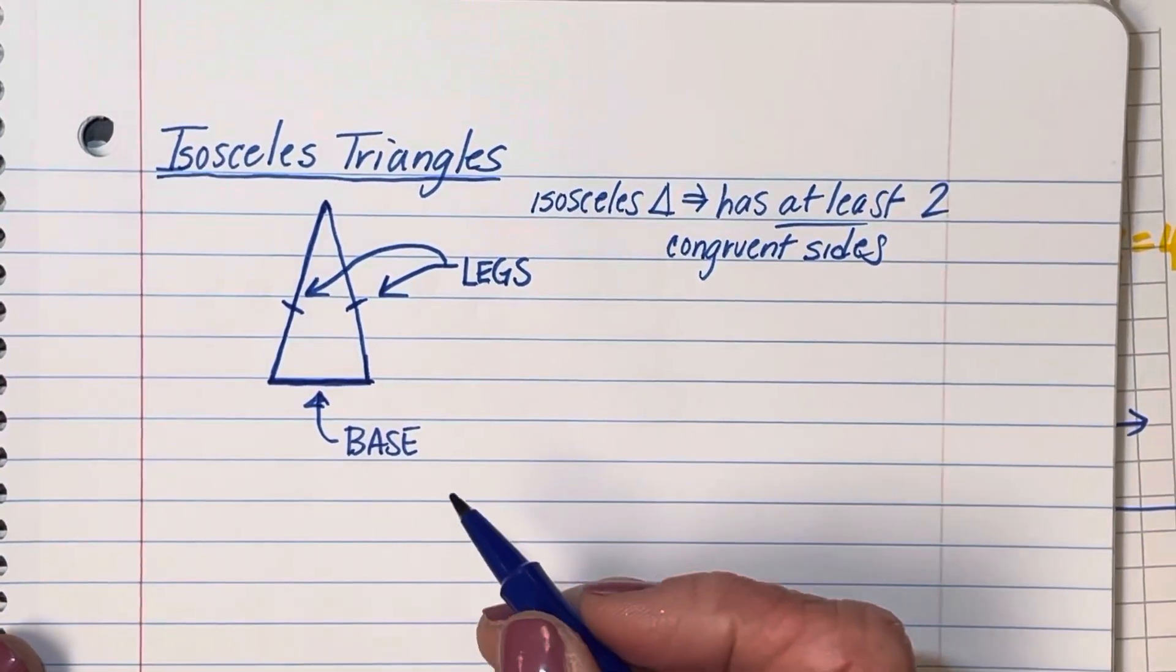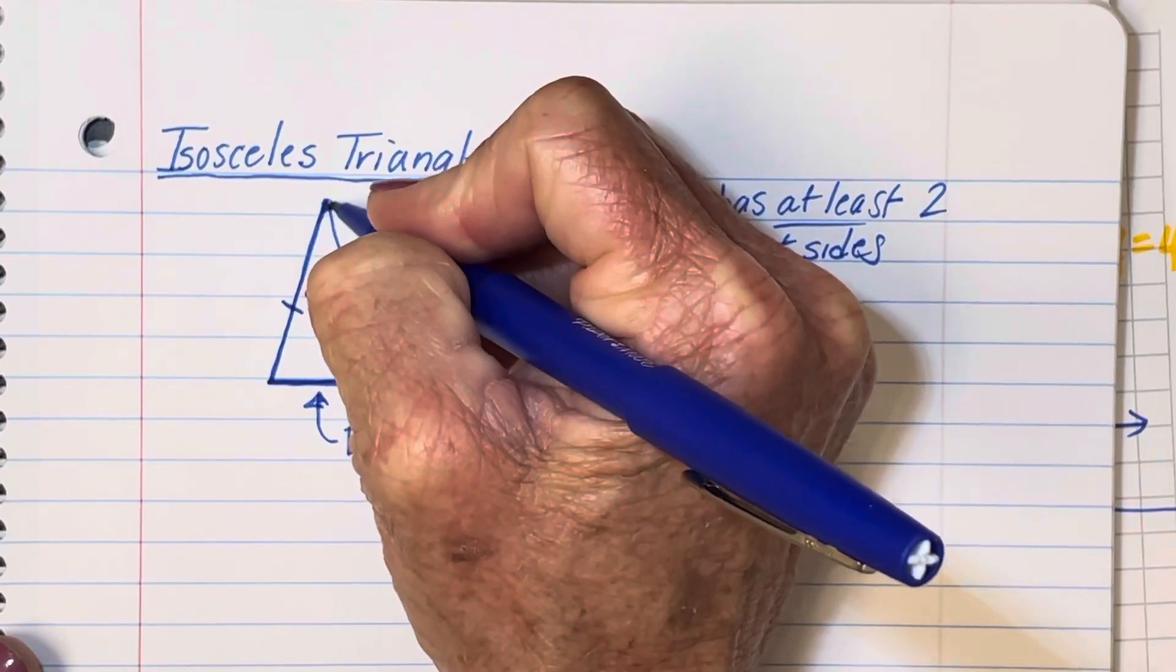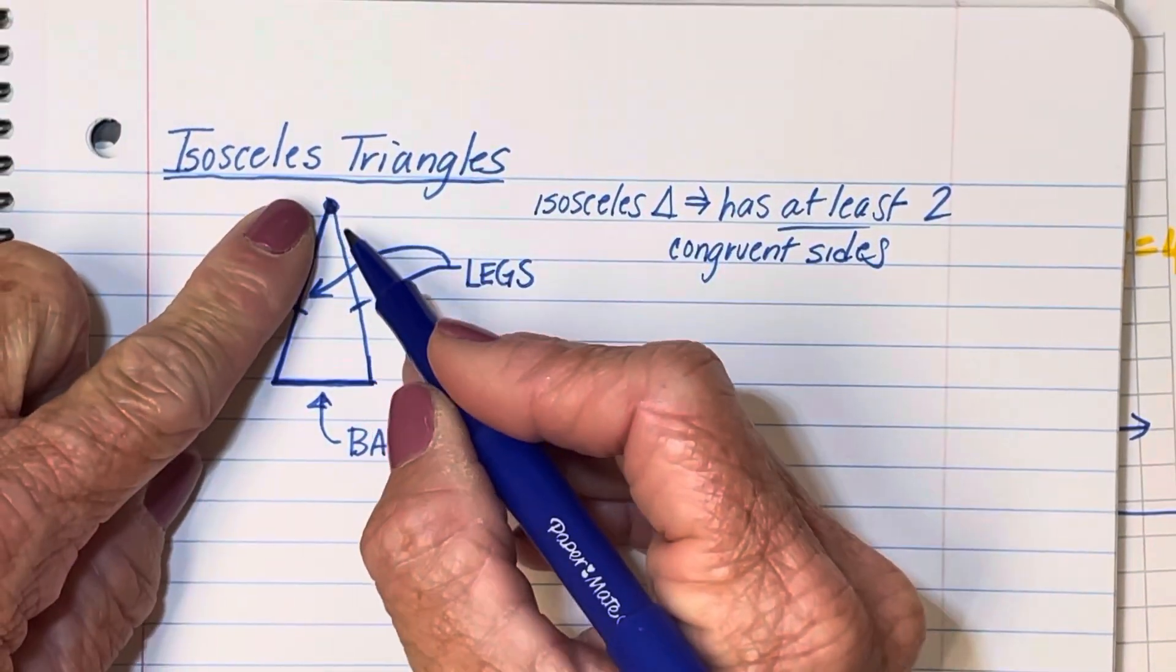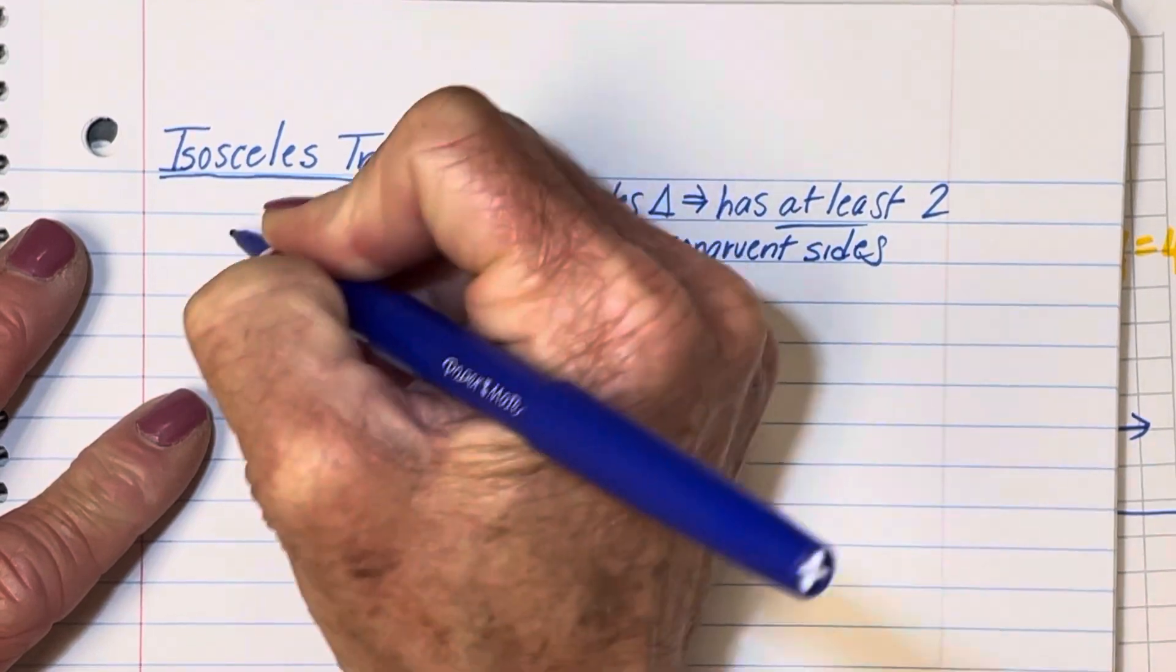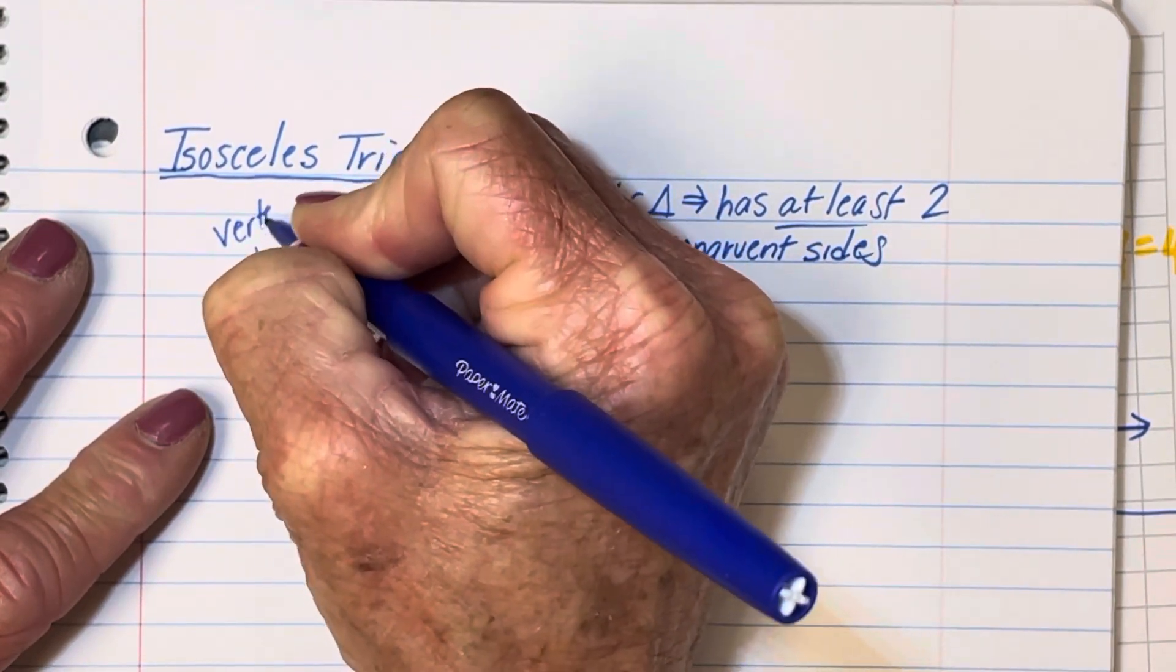So the two congruent sides are legs, the other side is the base. The angle where the two congruent sides connect, this angle is called the vertex angle of the triangle.